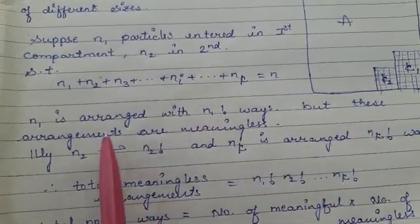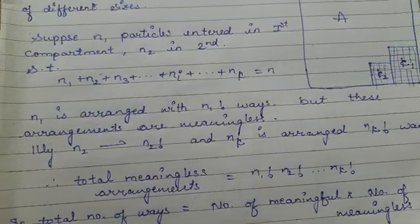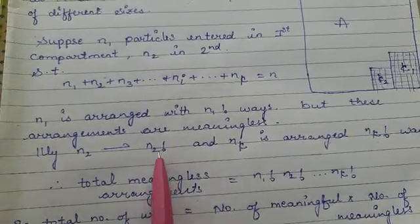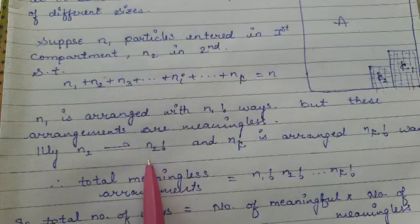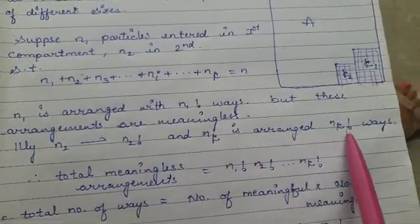But this arrangement is totally meaningless. Similarly, when we have N2 particles arranged, we arrange them in N2 factorial ways. Similarly NK, which we arrange NK factorial times.